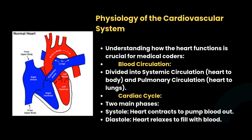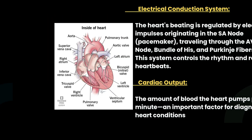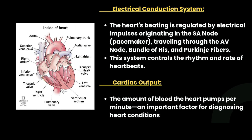Moving to the physiology of the cardiovascular system: blood circulation is divided into systemic circulation — heart to the body — and pulmonary circulation — heart to the lungs. The cardiac cycle has two main phases: systole and diastole. The heart's beating is regulated by electrical impulses originating in the SA node, the pacemaker, traveling through the AV node, bundle of His, and Purkinje fibers. This system controls the rhythm and rate of the heart.